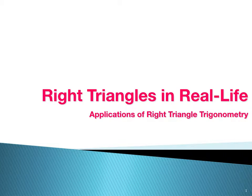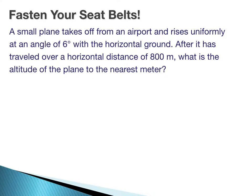Right Triangles in Real Life. A small plane takes off from an airport and rises uniformly at an angle of 6 degrees with the horizontal ground. After it has traveled over a horizontal distance of 800 meters, what is the altitude of the plane to the nearest meter?